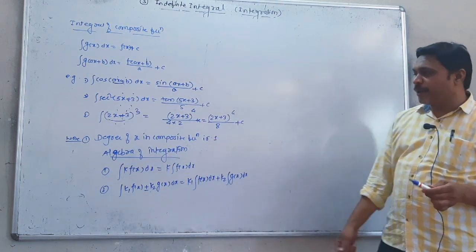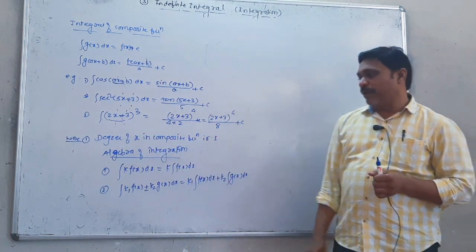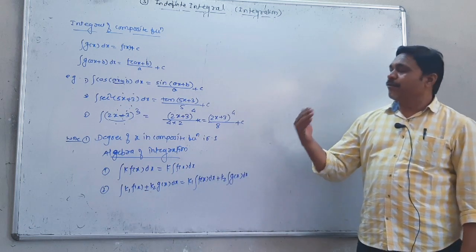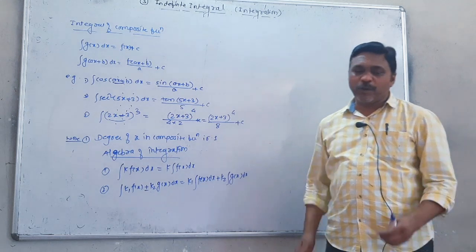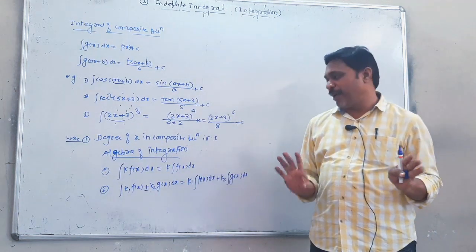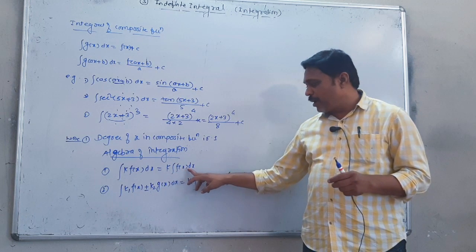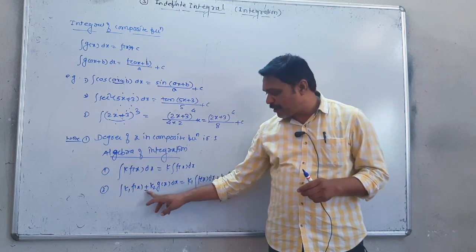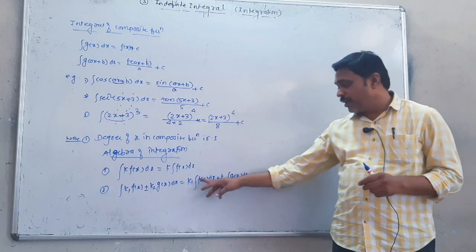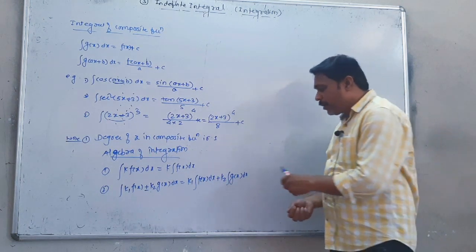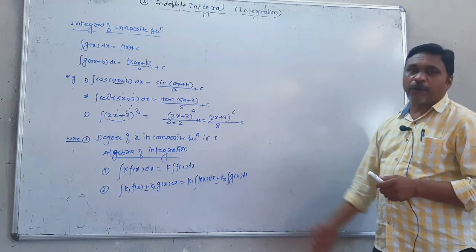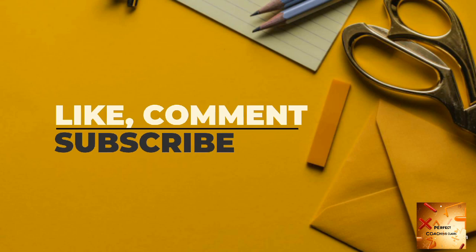Now, the algebra of integration. The degree of x in a composite function is 1. Algebra of integration: the integral of a constant into a function of x equals constant times the integral of f of x dx. And integral of k1 f of x plus or minus k2 g of x equals k1 integral of f of x dx plus or minus k2 integral of g of x dx.